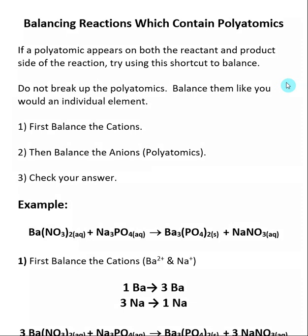If you're balancing a reaction that involves polyatomics, you might want to take a second and see if you can use this basic shortcut to make the process easier. During most reactions, polyatomics are not broken up. So if you put in a phosphate as a reactant, typically you get a phosphate out in the product. We're going to use this fact to simplify balancing — you balance the polyatomics like you would individual elements, treating a phosphate as an individual unit.